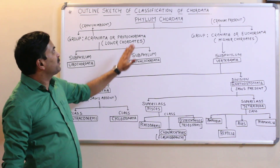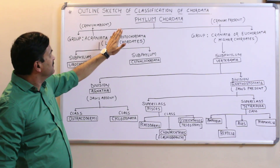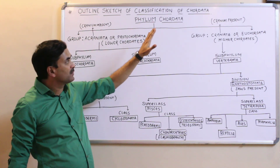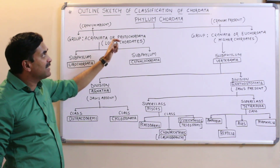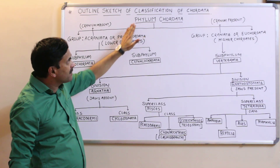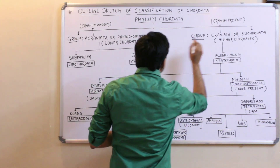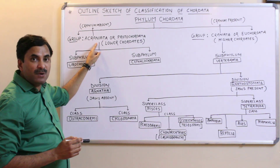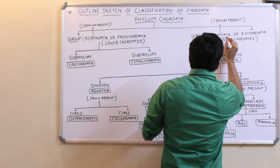Hello, today we are going to discuss a very important topic related to the animal kingdom — the outline sketch of the classification of the chordates. This will be very helpful in studying phylum Chordata. Broadly, phylum Chordata is classified into two major groups: one is known as Acraniata and the other is known as Craniata.